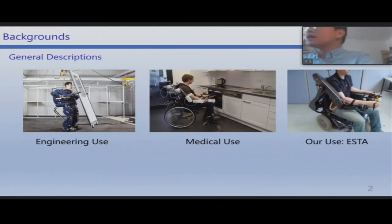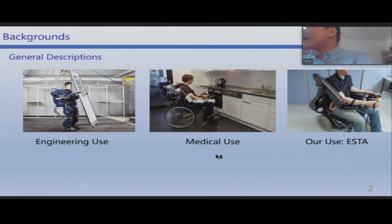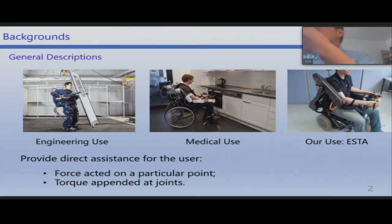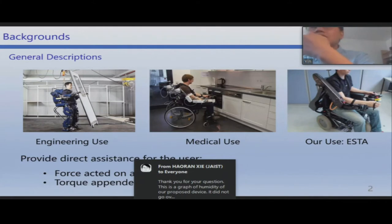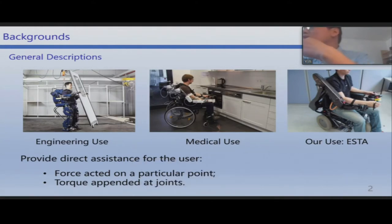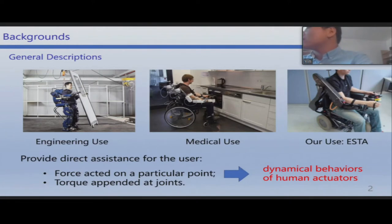We want to study the interactions between human mobility and devices — devices like exoskeletons. We can use them for engineering and medical purposes, and our use is already developed in the lab. The exoskeletons act as human mobility aids. They provide direct assistance for users by applying forces at particular points and also applying torques at the joints. These two elements can be regarded as dynamic behaviors that modify the dynamic behaviors of the human actuators.